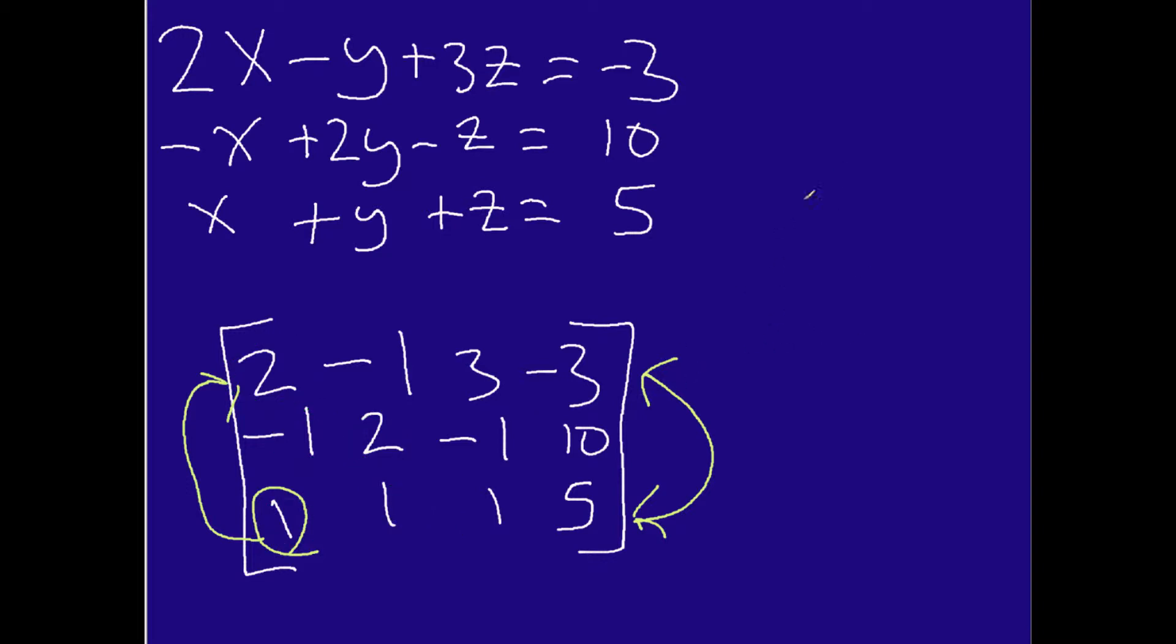And so that's what we're going to do right now. So if I do this, I will get something like this over here. I will have a 1, 1, 1, and a 5. Then I'll have a negative 1, a 2, a negative 1, and a 10. And then at the bottom, I will have a 2, negative 1, 3, and negative 3, like so. That's what we're going to take with us when we move to the next slide.